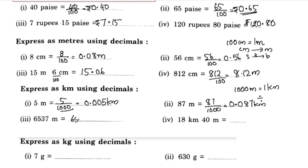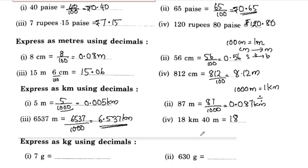This is 6537 by 1000. Then equal to a decimal point — this is 4 digits, equal to 6.537 kilometers.